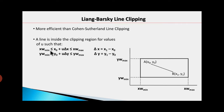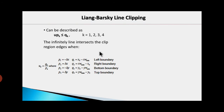These four inequalities in parametric form are: (1) x_wmin ≤ x0 + u·delta_x, (2) x0 + u·delta_x ≤ x_wmax, (3) y_wmin ≤ y0 + u·delta_y, and (4) y0 + u·delta_y ≤ y_wmax. These can be written in a compact form as u·pk ≤ qk, where k=1,2,3,4 representing the four clipping boundaries: left, right, bottom, and top boundary of the clip window.